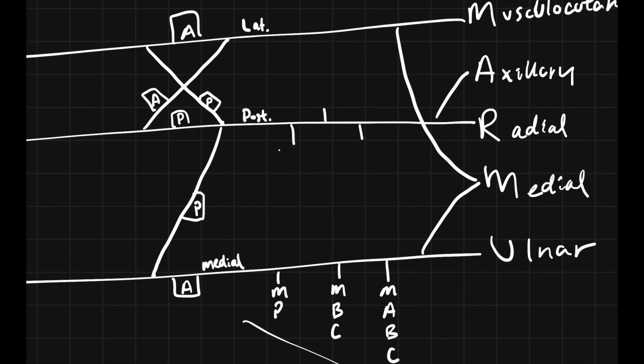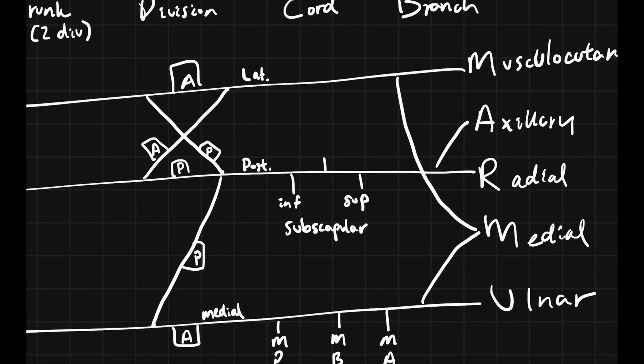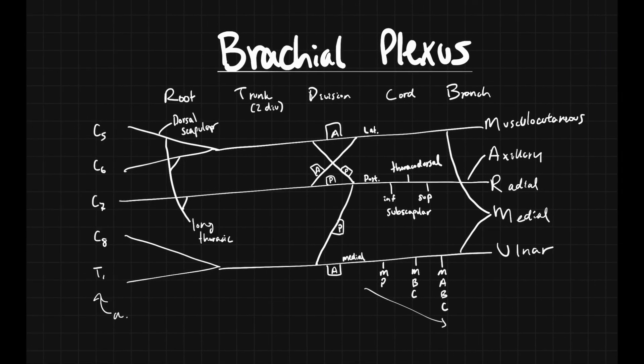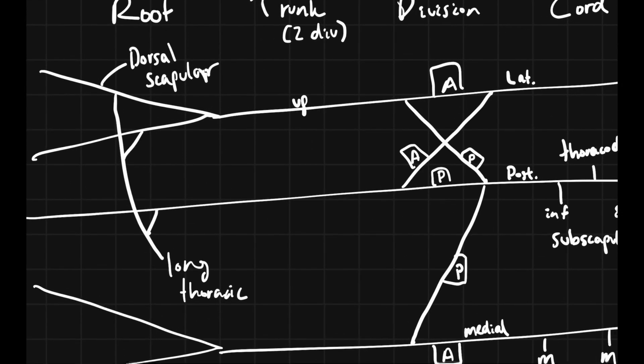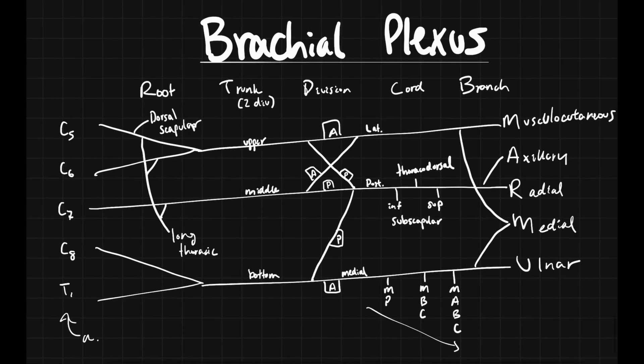Here for your posterior you're going to have your inferior and superior subscapular nerve. You're also going to have your thoracodorsal nerve here. This just about sums up your brachial plexus. You're obviously going to have your upper trunk, your middle trunk, and your bottom trunk. Thank you, have a great day.